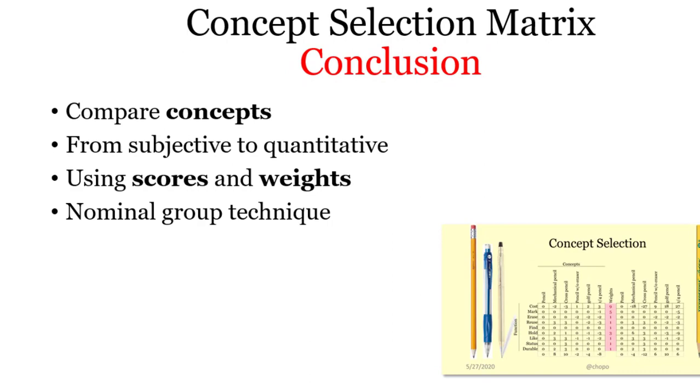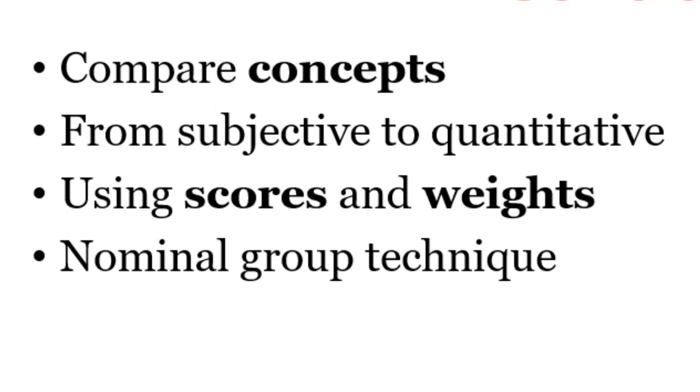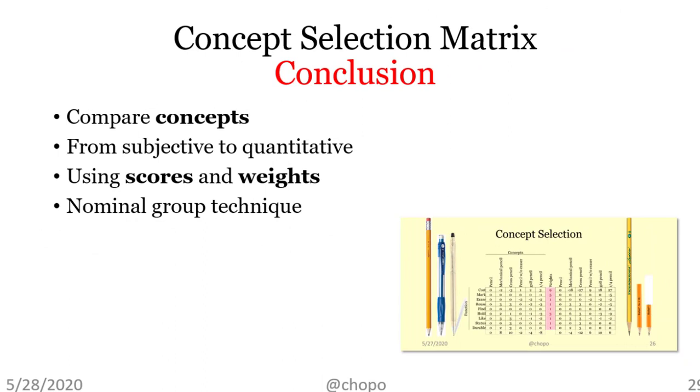Use the concept selection matrix when you want to compare concepts. Use it when you want to go past the obvious. As you saw, the scores and the weights are subjective. Now that you know how this works, bring the team to agree on the scores. Use it as a nominal group technique. As a team, you will want to talk about what each score and weight means to your team. Take notes so you remember how you arrived at each of these scores and weights.